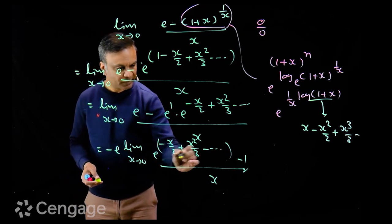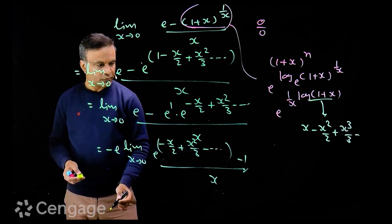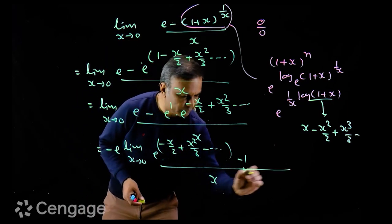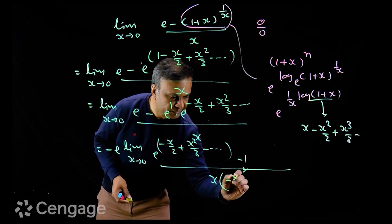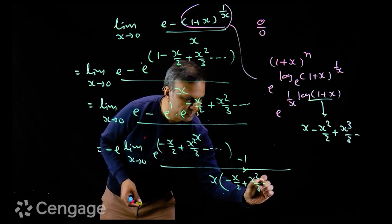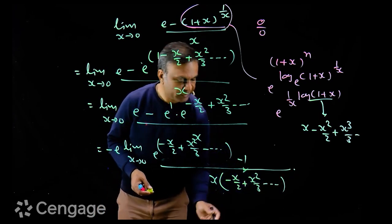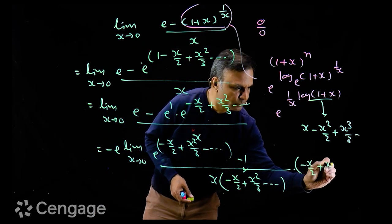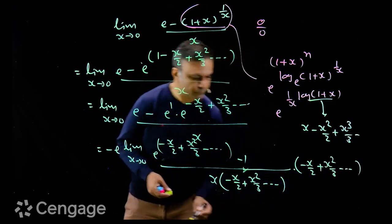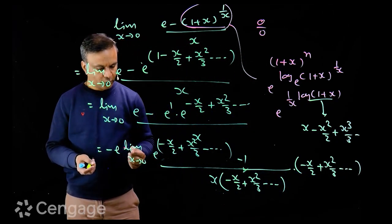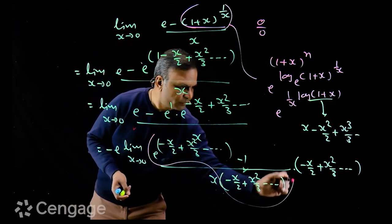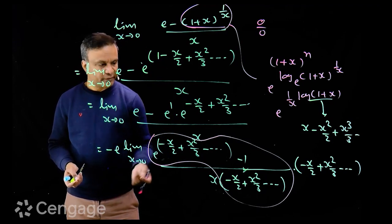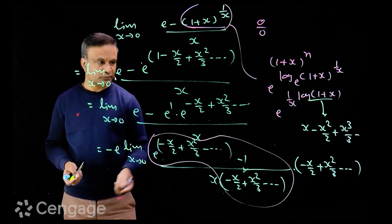Now, when x tends to 0, this expansion tends to 0. So we divide and multiply by this expansion. So in denominator, we have x multiply by in the bracket minus x by 2 plus x square by 3 and so on. We multiply here with the same bracket minus x by 2 plus x square by 3 and so on. Okay, now when x tends to 0, this limiting value is 1 using standard limit e power x minus 1 upon x when x tends to 0.